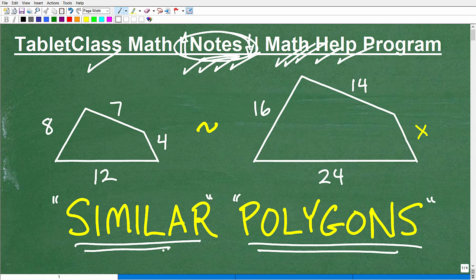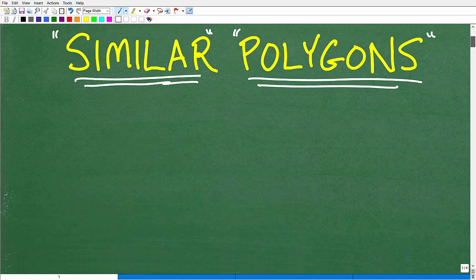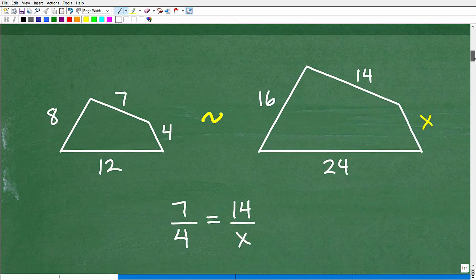But then we have this other word over here, similar. So what does that word mean? I'm going to talk about that here in a second. This is the symbol for similar. And this symbol looks a lot like this symbol, which is a different symbol in geometry - that's congruent. So we're going to tackle this problem, and I'll tell you more about what similar means.